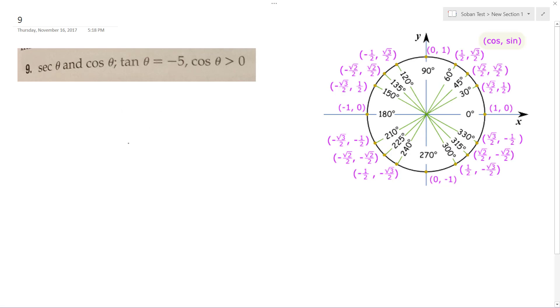Tangent of theta is equal to negative five, and cosine is greater than zero. So that means this is going to take place in quadrant four, because to the right of the y-axis cosine is greater than zero, and tangent is only negative in quadrant four.